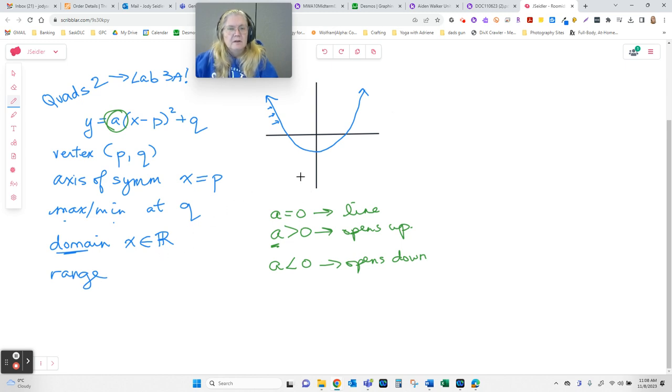Range is our y values. Remember, we have something called a max or a min. If it's opening up, this is a min, this is my minimum. And if you think about what minimum means, that's the smallest. So q is the smallest y value we have, so it's going to play a part in my range. My range is always going to be y something q. If this curve opens up, then my y values are going to be greater than or equal to q. And they are real numbers. And you should have all of that as a part of your answer. If it opens down, then the y values are less than or equal to q. You have to think about the symbols that we're using in there.